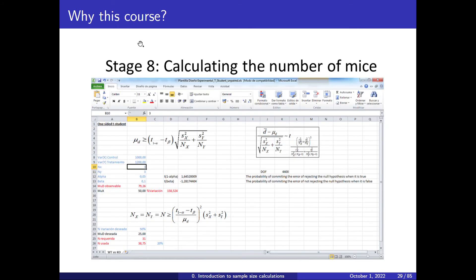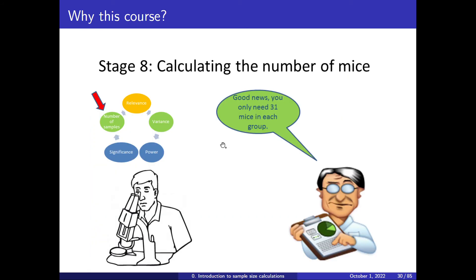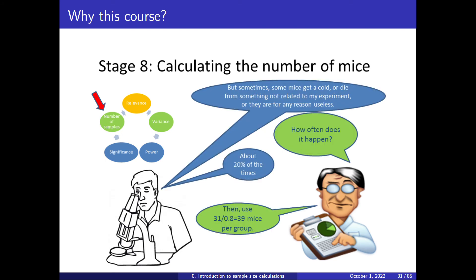Good news: you only need 31 mice in each group. You fixed four variables and computed the fifth. But sometimes animals get a cold or die from something unrelated to the experiment and become useless — say this happens 20% of the time. To account for dropouts, divide 31 by 0.8 (the complement of 20%), which gives 39 animals per group. If you lose 20% of these 39 animals, you still have the 31 needed for comparisons.